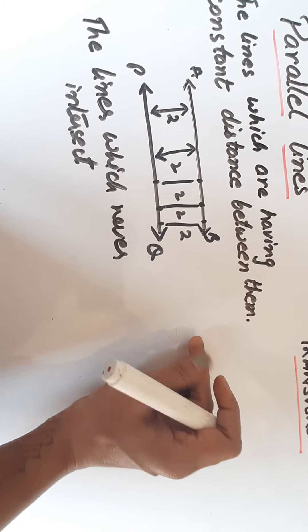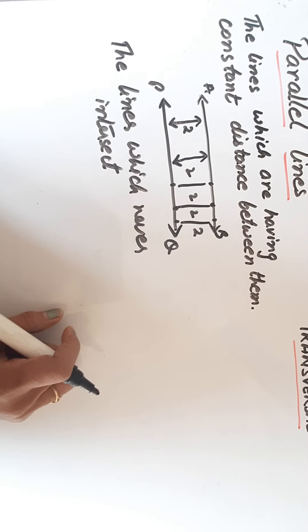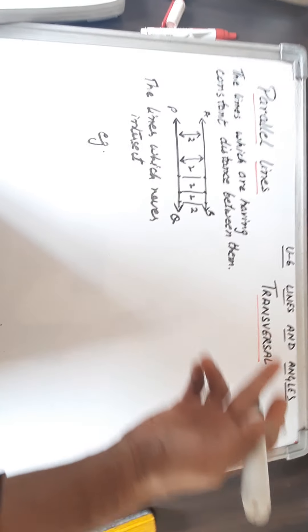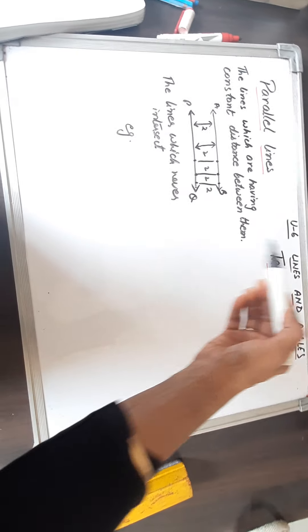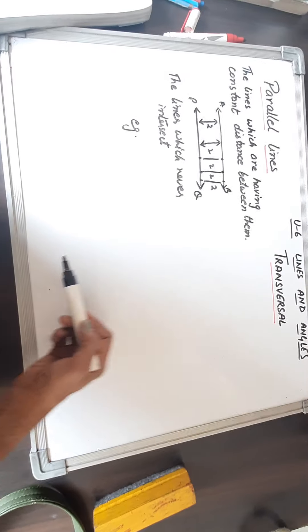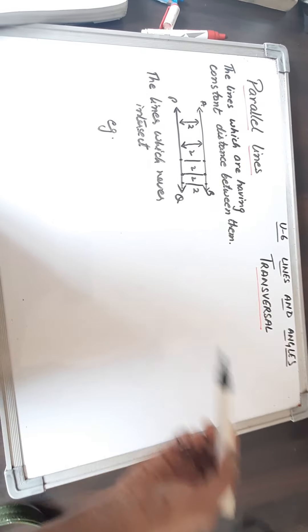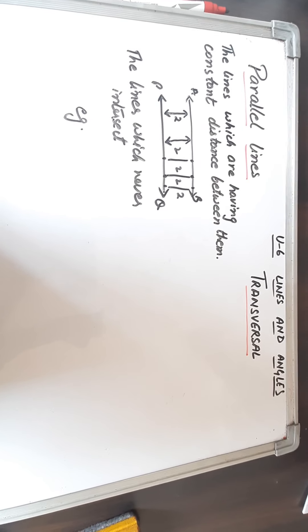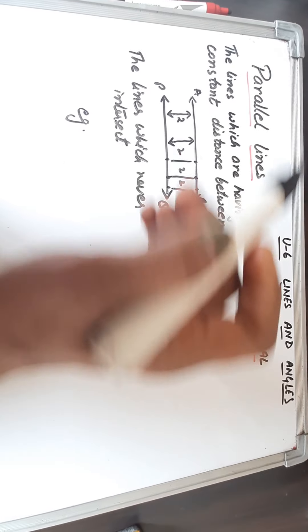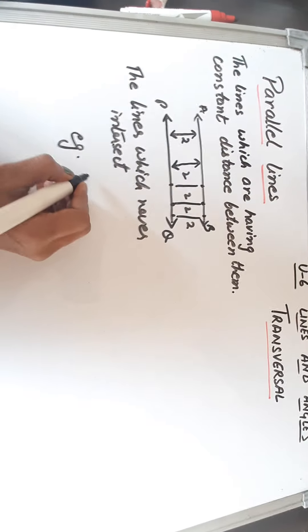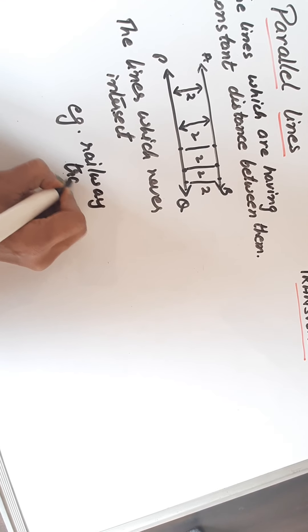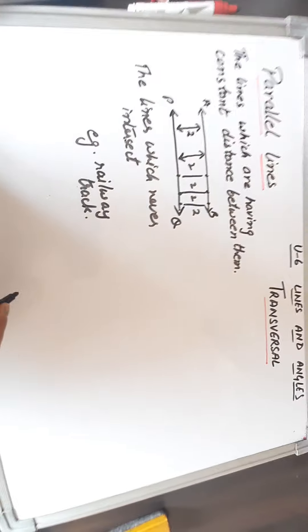Because if the distance is constant, it will never intersect. An example of parallel lines — as you can see on this board, the two opposite sides are parallel lines because the distance between them is constant. Around you, you can see many things which show parallel lines, and the railway track is also one example of parallel lines.